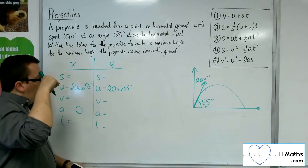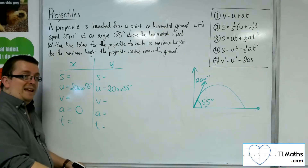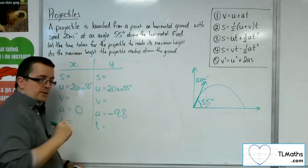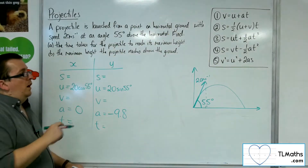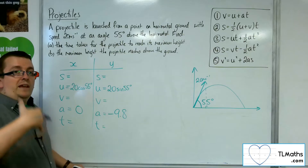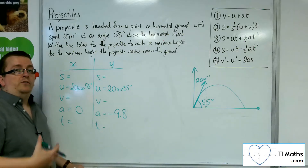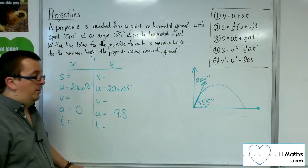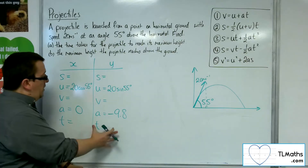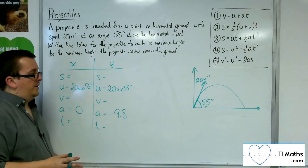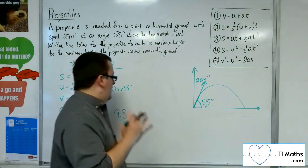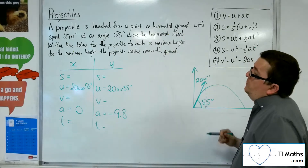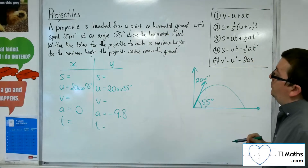For the vertical direction, the only acceleration is downwards at the rate of gravity, where I'm going to be using 9.8. I'll be using 9.8 for all these problems — if you're told to use a specific g that is not 9.8, then you've got to use that in the exam. The time I don't know either. So this is all I have.